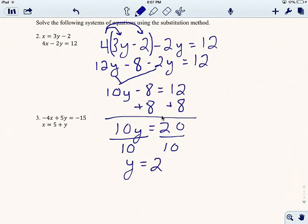Okay, now I'm trying to get y by itself. So I add 8 to both sides. Okay, and I'm going to end up with 10y equals 20. And I'm almost done. Last thing to get rid of that 10, I have to divide everything by 10. So I get y equals 2.